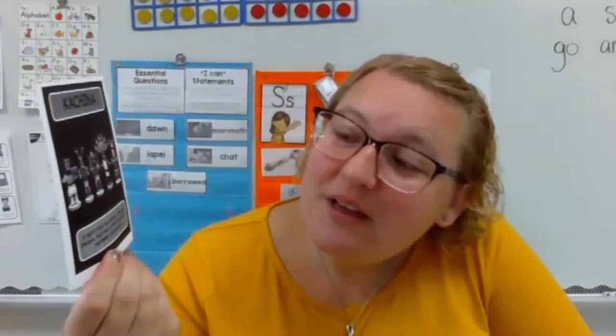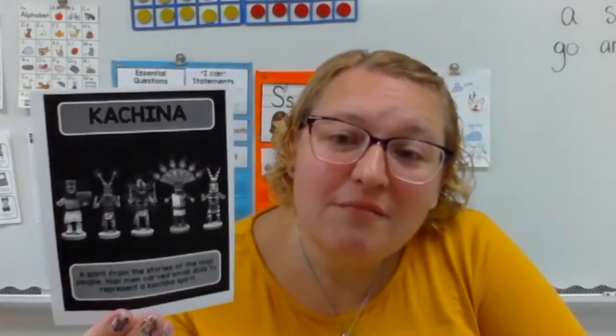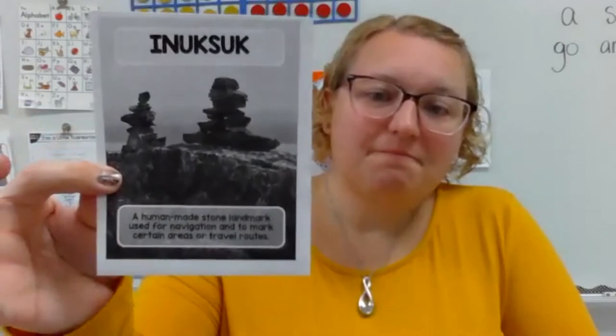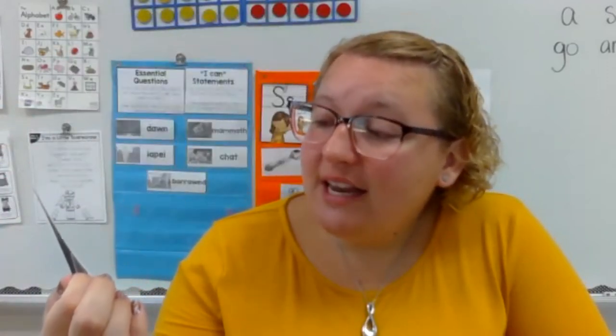These are kachinas. A kachina is a spirit from the stories of the Hopi people. Hopi men carved small dolls to represent a kachina spirit. These are little dolls that they would carve and make to represent spirits. Native Americans also used human-made stone landmarks for navigation and to mark certain areas or travel routes. They would use stones to build structures to help them know where they've been, where they've traveled, and to help navigate to get back home. It was their own little version of landmarks since they didn't have maps.